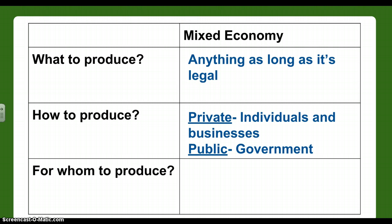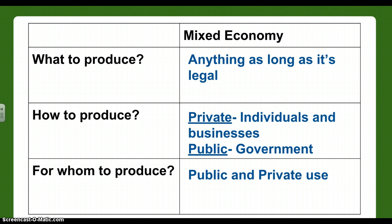How we produce in a mixed economy: the private sector — individuals and businesses — can come up with ideas and make anything legal. Then the government provides things for the public, like parks and schools — anything meant for the whole country, not just paying customers. For whom: public use like schools and transportation systems, and private use for people spending their money on candy, a car, whatever.